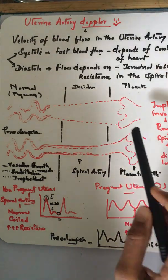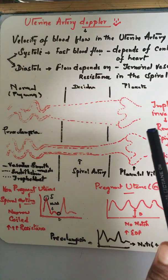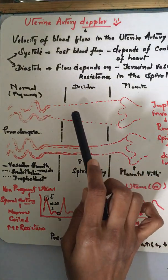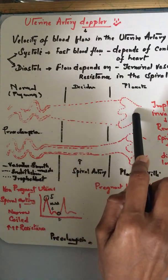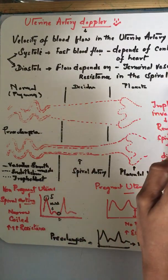Why should this remodeling happen? Due to remodeling, these narrow vessels are converted into dilated vessels so that there is increased blood flow to the placenta and from there to the fetus, providing more nutrients to the fetus.